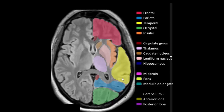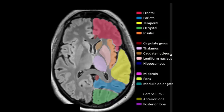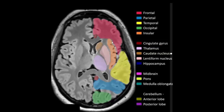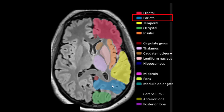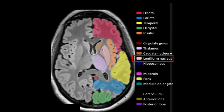Frontal lobe, temporal lobe, parietal lobe, occipital lobe, insular cortex, lentiform nucleus, thalamus, head of caudate nucleus.